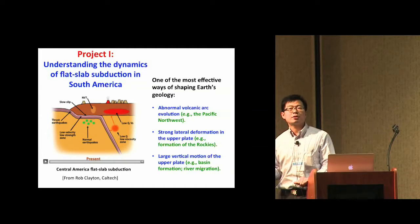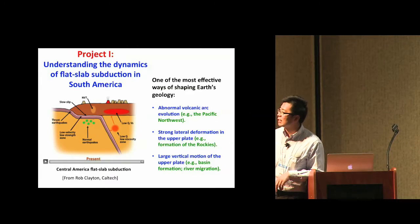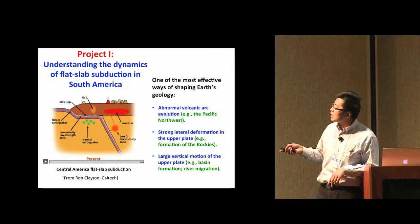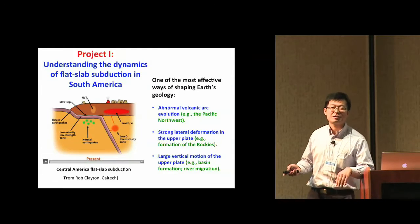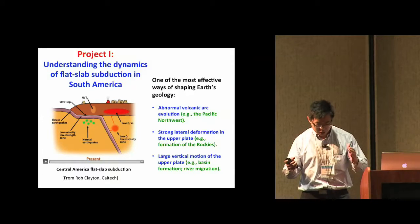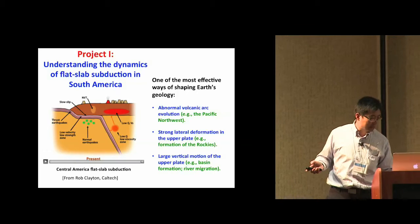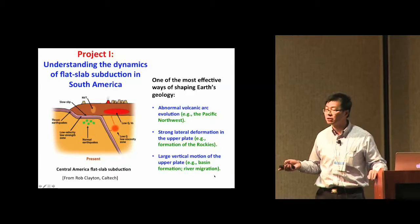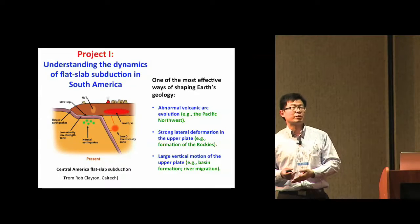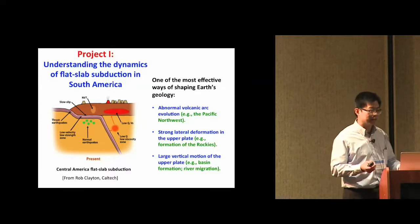We study this problem because flat slab subduction is presumably one of the most efficient ways of shaping the Earth's surface geology. For example, it causes volcanic arcs to migrate inland as the slab flattens, including the Pacific Northwest. Another effect is strong lateral deformation of the upper plate — for example, the formation of the Rocky Mountains is potentially related to past flat slab subduction. Also critically important is vertical motion of continents, causing subsidence, sediment basins, oil and gas deposits, and river migration affecting paleoenvironments.